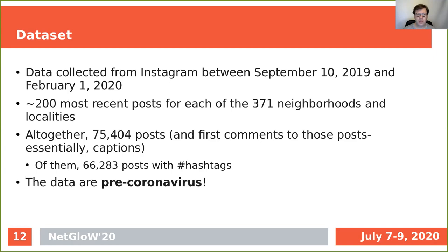For each neighborhood and locality out of 371 identified, we collected about 200 most recent posts. This is not necessarily fair coverage of all neighborhoods because some are smaller, some are bigger, some more important, some less — but lacking comparative information, we decided to keep the sample size the same for each neighborhood. Altogether, we got 75,404 posts and first comments to those posts. The comments actually serve as captions to the photographs. 66,000 of the posts had hashtags, and those posts were the most precious for us, because our study is based on hashtag analysis rather than plain text analysis.